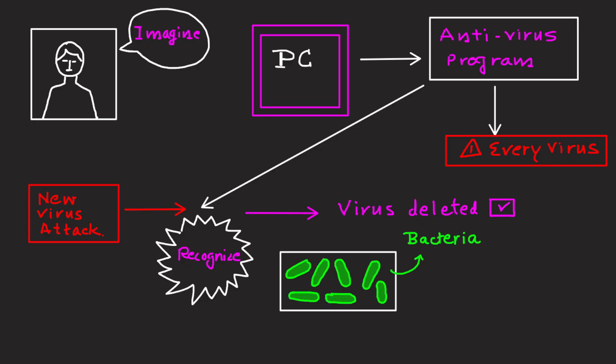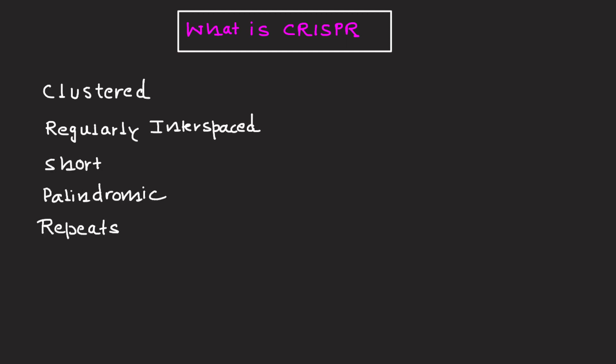Now let's talk about what CRISPR is. CRISPR stands for clustered regularly interspaced short palindromic repeats. Let's break it down. Clustered means found grouped together. Regularly interspaced means the segments are evenly spaced like bricks in a wall.